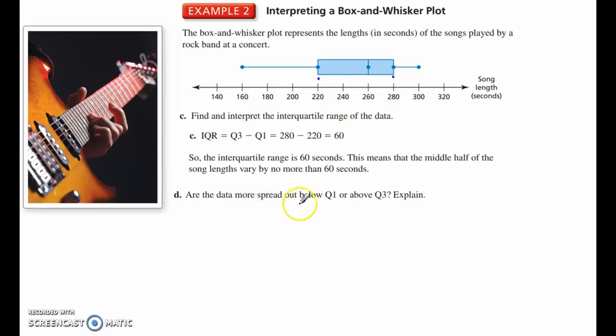Are the data more spread out below quartile 1 or above quartile 3? So, there's Q1, quartile 1, here's quartile 3. Where are they more spread out? Well, this whisker is a lot longer, which means the data are more spread out. This is the same number of data values, 25%, but it's spread out more. So, since the left whisker is longer than the right whisker, the data below quartile 1 are more spread out.